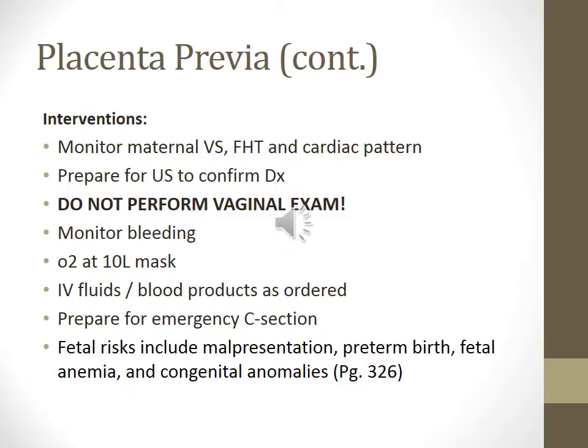Interventions for placenta previa: monitor maternal vital signs, fetal heart rate, and cardiac pattern. Prepare for ultrasound to confirm the diagnosis. Do not perform vaginal exams. Monitor for bleeding. Administer O2 at 10 liters by mask, IV fluids, and blood products as ordered. Prepare for emergency c-section. Fetal risks include malpresentation, preterm birth, fetal anemia, and congenital anomalies. This information is in your textbook on page 326.